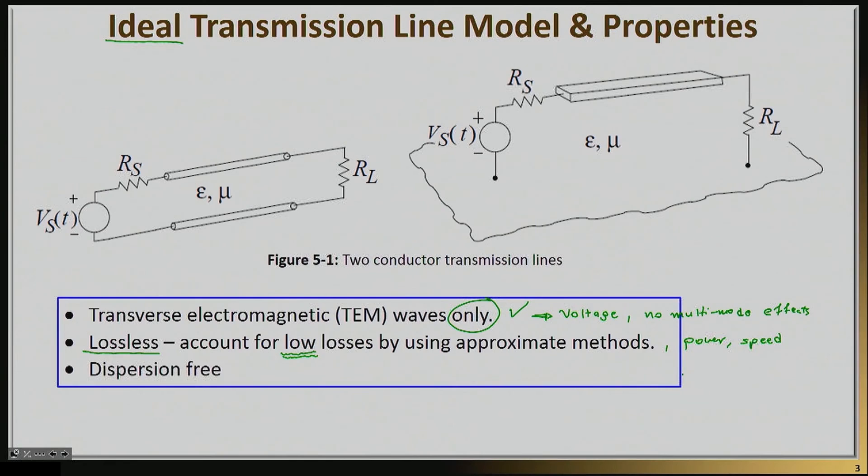And finally, a transmission line, if it's ideal, is a dispersion-free structure. Which means that all waves, no matter what frequency, propagate with the same velocity.